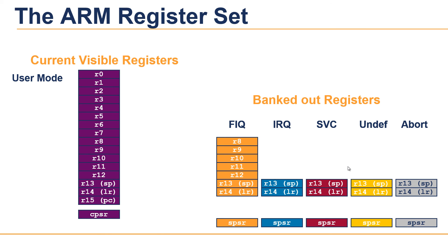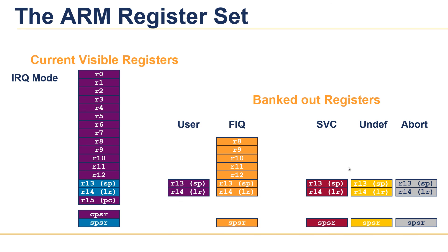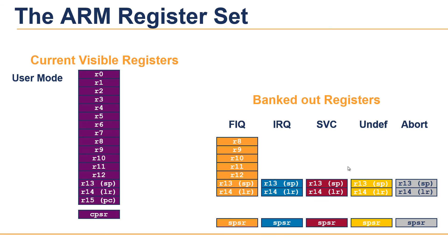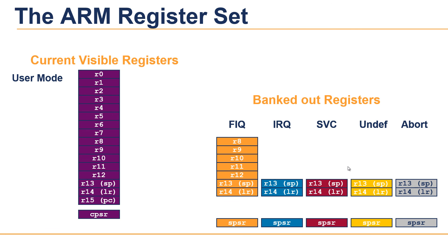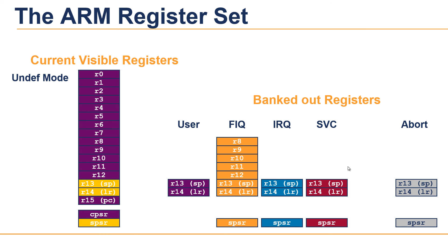Then it goes into IRQ mode, where you can see R13, R14 and the SPSR are changed. Then again it returns to User mode with the same set of registers. In SVC mode, R13, R14 and the SPSR have been changed. Then back to User mode, previous set of registers, and in Undefined mode R13, R14 and the SPSR are changed.